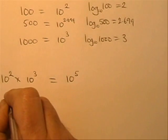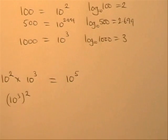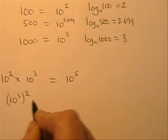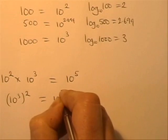And then the other law we need to use, imagine something like 10 to the power 3. If we square that, that's 10 to the power 3 times 10 to the power 3, which is 10 to the power 6.